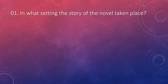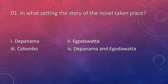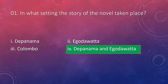Let's start. The first question is: in what setting has the story of the novel taken place? The answers are Depanaman, Ekudavath, Kolumbu, and Depanaman and Ekudavath. The answer is Depanaman and Ekudavath, because their old house was situated in Depanaman and they moved to a new house in Ekudavath. So the story is based between these two locations.